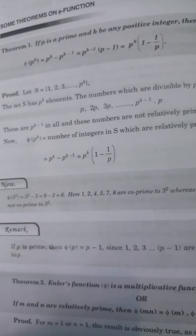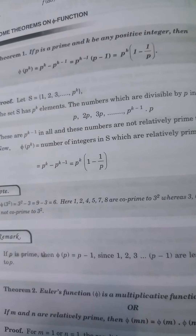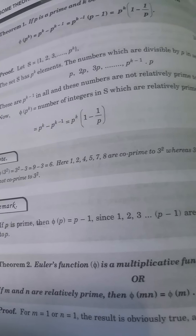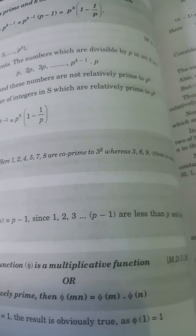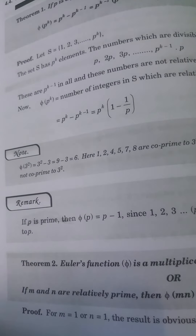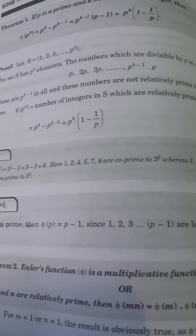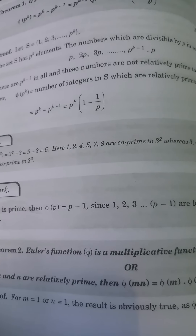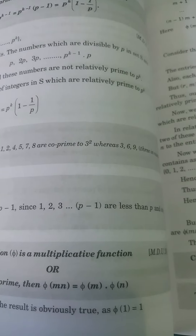Remark: If p is prime, then phi(p) = p − 1, since 1, 2, 3, ..., p−1 are all less than p and co-prime to p.